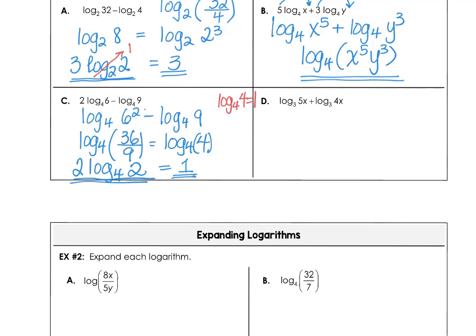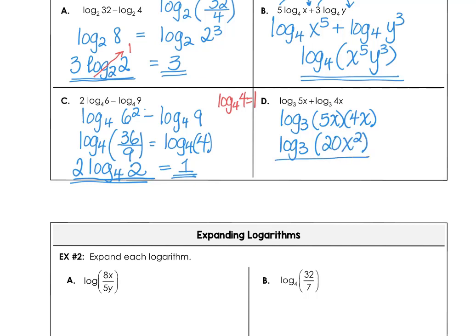In part d, we have log base 3 of 5x plus log base 3 of 4x. When you have two logs added together, that's the product of the two arguments, which is 20x squared. In this case, I can't pull that 2 out in front because this is not a perfect power of the base, so we just have to stop here.